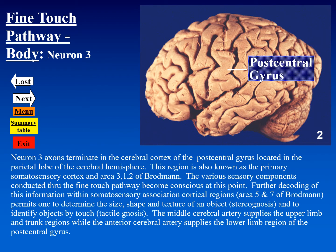Fine touch information received by neurons in the postcentral gyrus is essentially raw data that must be analyzed further so that one can describe the size, shape, or texture of an object — known as stereognosis — or identify an object by touch alone, known as tactile gnosis. This analysis takes place in areas five and seven, just posterior to the postcentral gyrus.